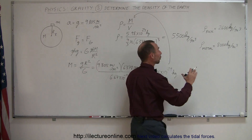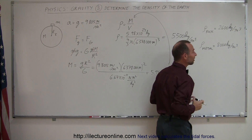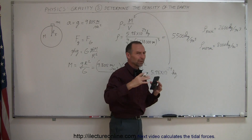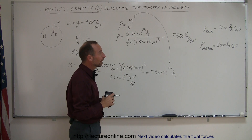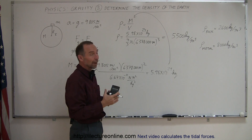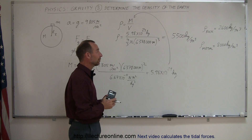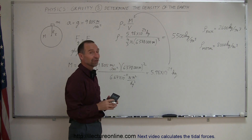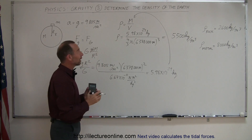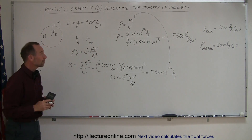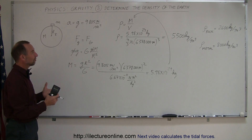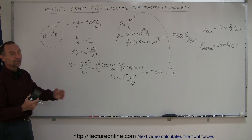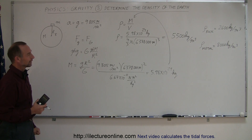Also taking into account that at the center, the density is actually higher because of the enormous pressure toward the center of the Earth, you can see that the Earth is made up of about half rock and half metal, and that's how we figured that out. You can see how we can use the universal equation of gravity to determine the density of the Earth and also the approximate makeup of the Earth. All interesting stuff.